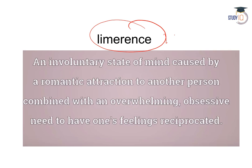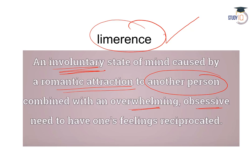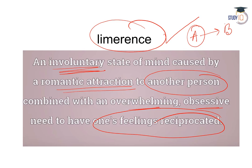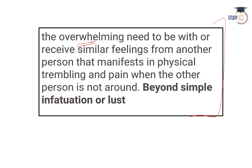Moving on to limerence. Limerence shabd ka arth hota hai — ek aisi feeling jo aap ek doosre vyakti ke prati rakhte hain which is more than infatuation. An involuntary state of mind jahan par aapki ek romantic attraction ho jati hai to another person, or an overwhelming obsessive desire hota hai — aap chahte hain ki doosra vyakti bhi reciprocate kare. Limerence ka arth: the overwhelming need to be with one, or to receive similar feelings from another person.